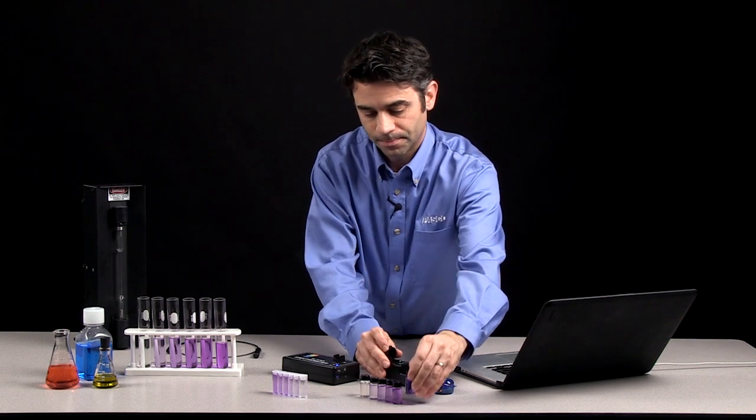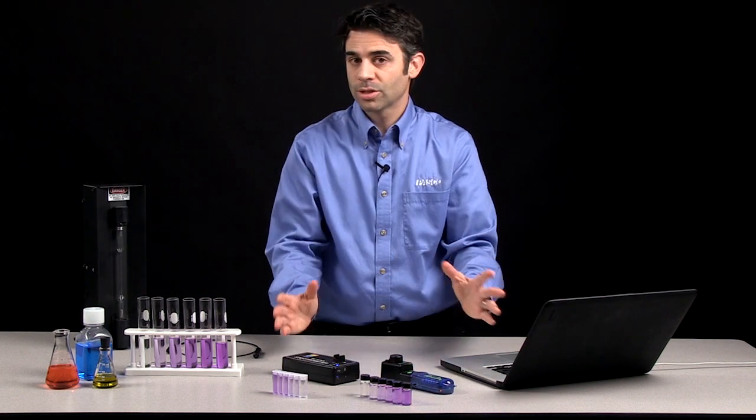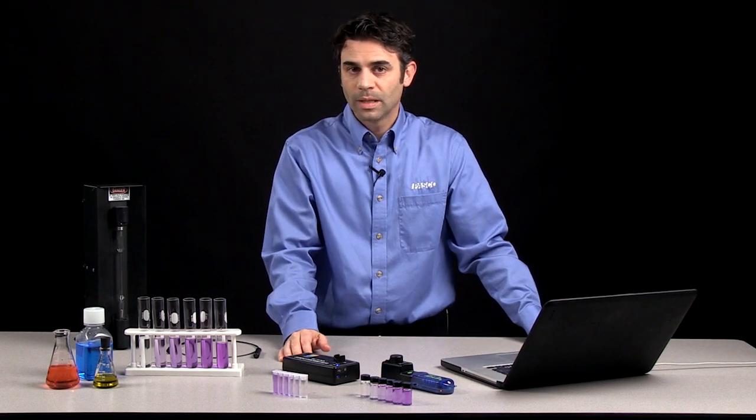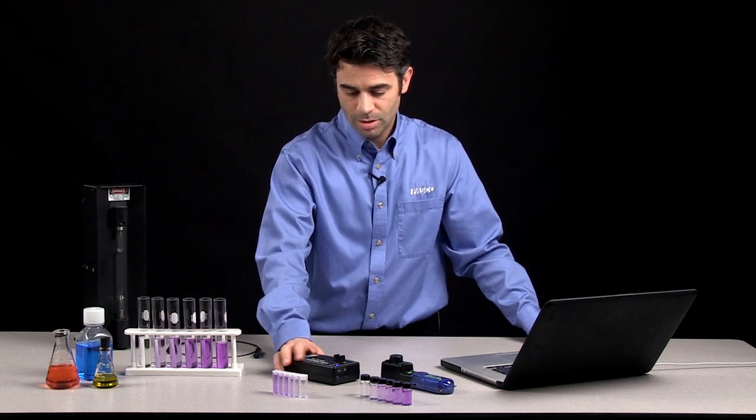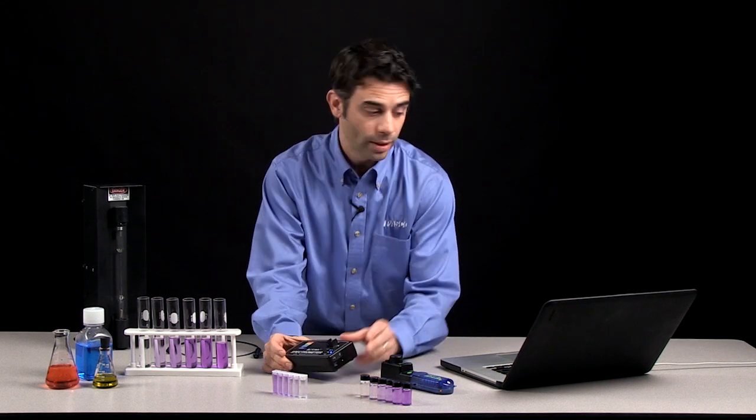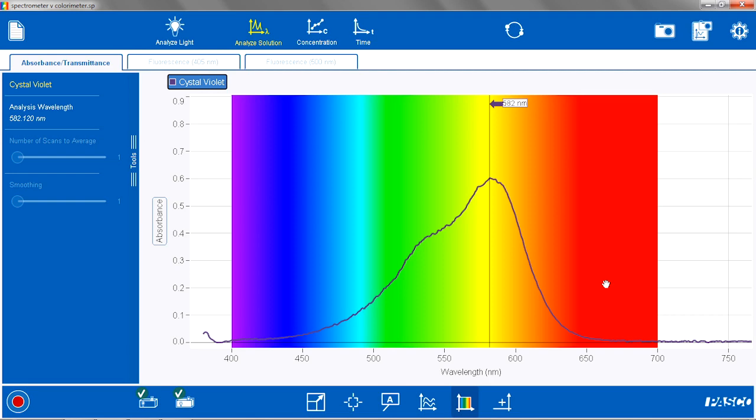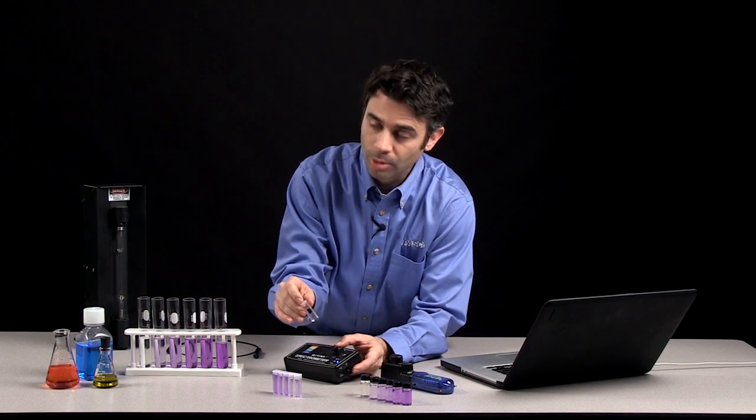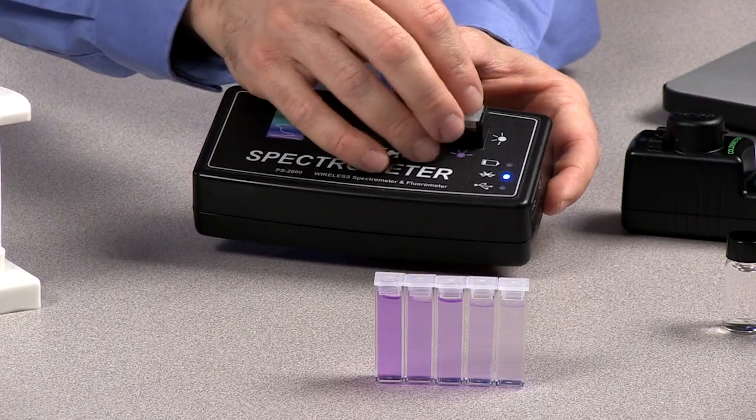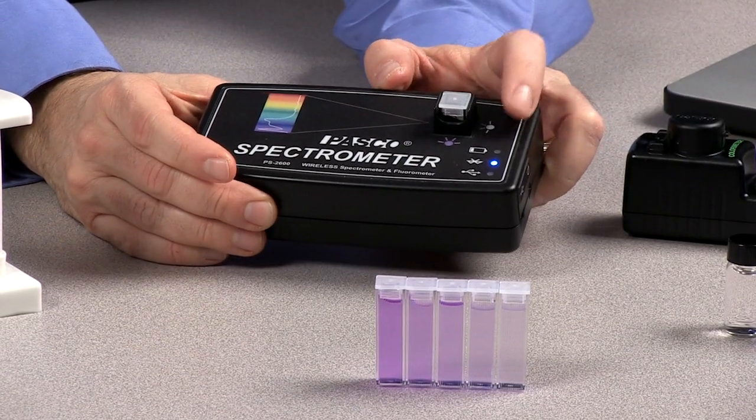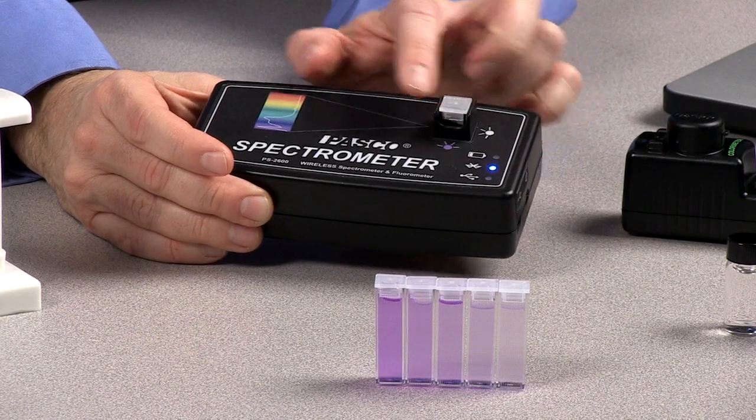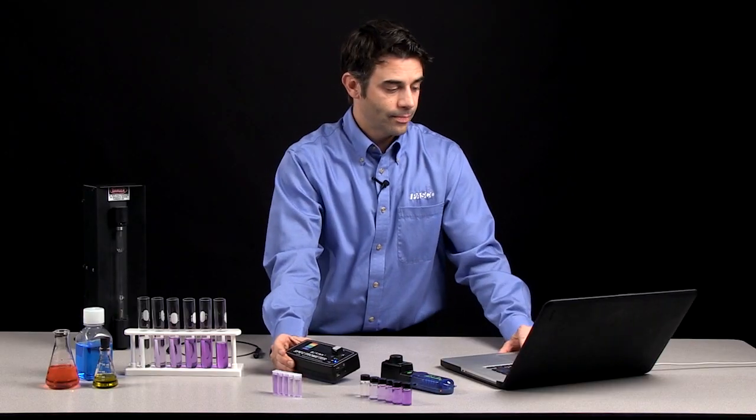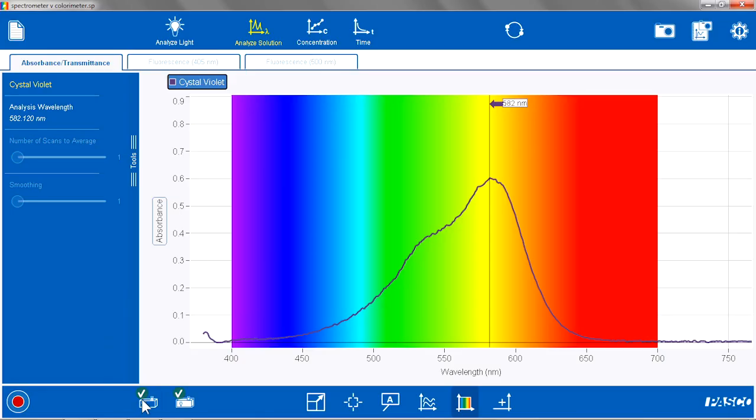For the spectrometer, I can also do an initial analysis of a colored solution. So the spectrometer will work with its own app, called the Spectrometry app. And I would do the same thing I did with the colorimeter. I would blank it using a reference, in this case a water sample, putting it in so that the white light source goes through the sample to the detector. And then I would calibrate my reference, turning the lights on and off.